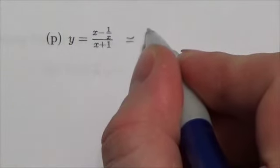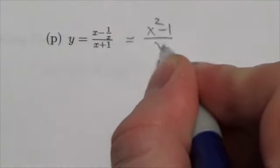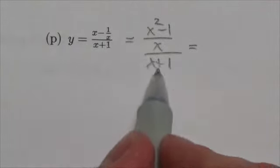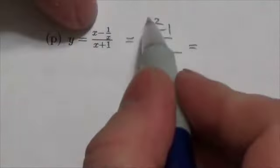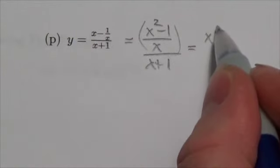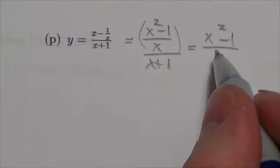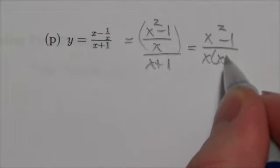So the numerator is going to become x squared minus 1 over x over x plus 1. And then because of the way the denominator works here, I'm dividing fraction by this. This is going to end up becoming x squared minus 1 over x times x plus 1.